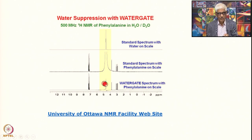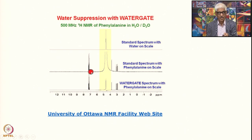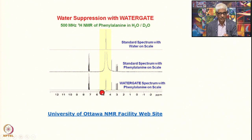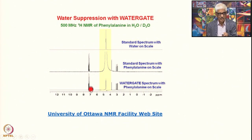Now you scale this up so you see the water gets saturated — cut off — and you start seeing the tiny signals of phenylalanine. This is again the same spectrum except that it is just scaled up. Now you do an experiment with the watergate: you suppress the water and now you see the water signal is much less than your actual sample signals. These are your phenylalanine signals.